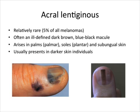Acral lentiginous melanoma is a relatively rare melanoma, comprising only 5% of all melanomas. It often presents in darker-skinned individuals, on the palms, soles, or subungual skin, as noted on both images — often a dark brown or blue-black macule with ill-defined borders. They are associated with a poorer prognosis.